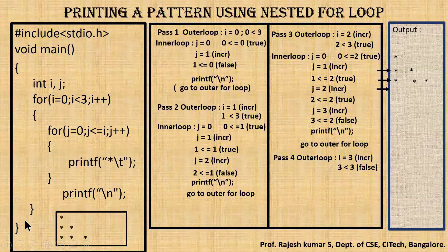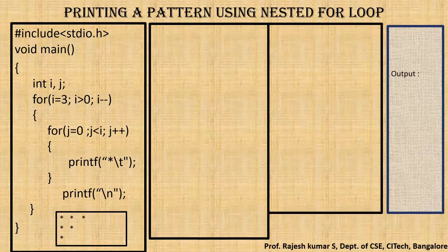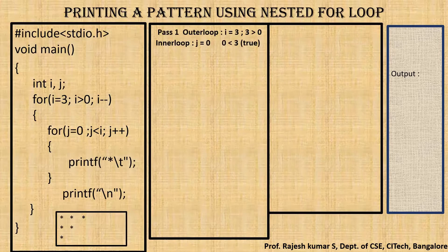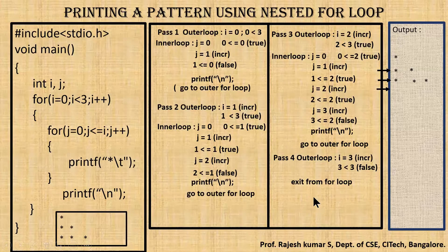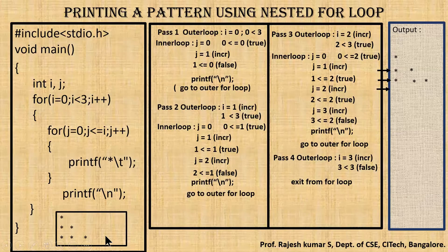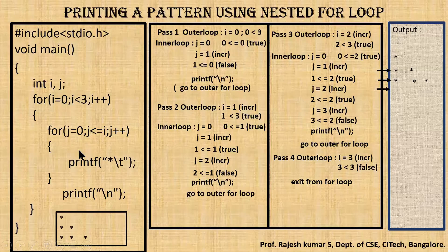Three is less than three — false. We exit the outer for loop and end the program. The pattern has been printed. In pass one the outer for loop iterated once and the inner for loop executed once printing one star. In pass two, the inner for loop executed twice printing two stars. In pass three, the inner for loop executed three times printing three stars.